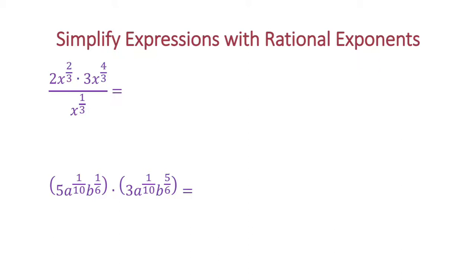On the top, we're going to first add the exponents and multiply the coefficients. So the coefficients in front we can multiply: 2 times 3 equals 6. Now it's x to the 2 thirds plus 4 thirds, which is 6 thirds. I did not simplify that yet because we would have to unsimplify to do the next step.